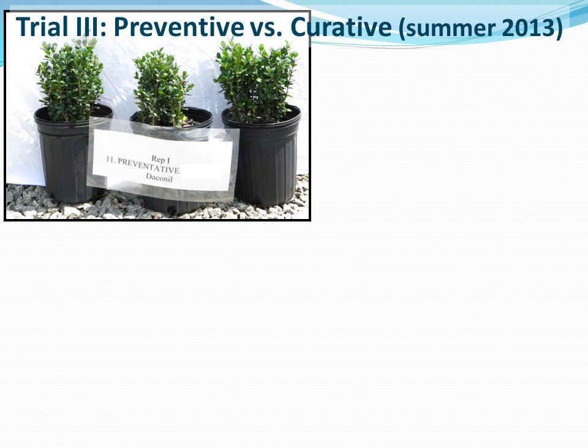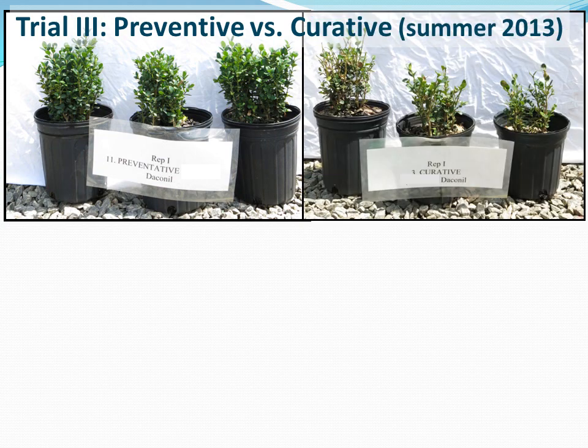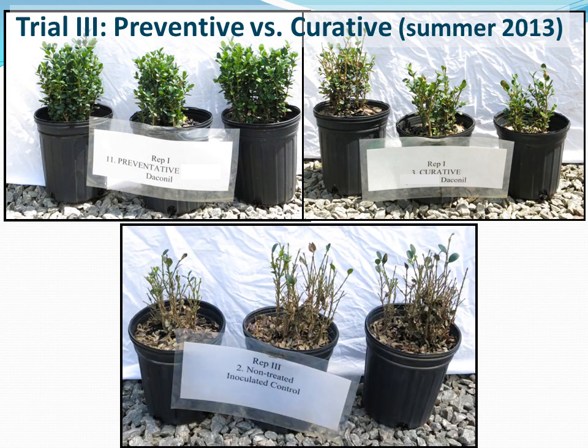These pictures are a nice visual from the data I just presented. This is Daconil as a preventive application on one-gallon English boxwood. This is Daconil as a curative application on one-gallon English boxwood. And this is what the boxwood looks like if you make no fungicide applications at all.